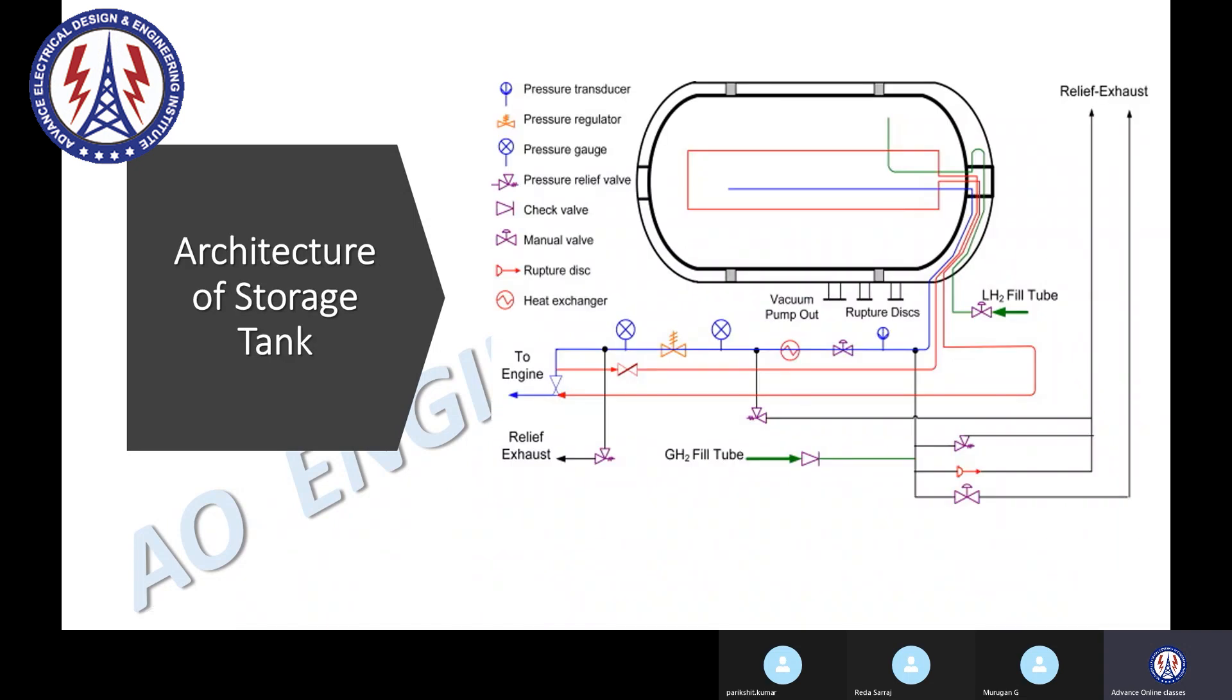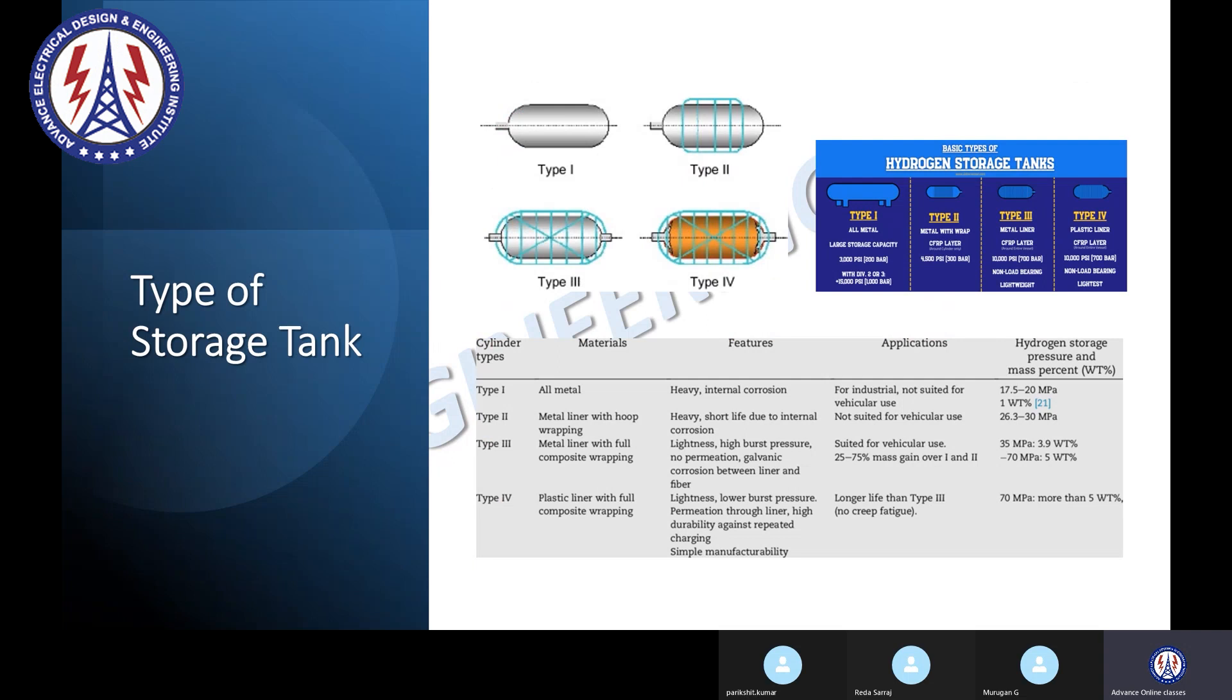We are using four types of tank. Those four types of tanks are called Type 1 tank, Type 2 tank, Type 3, and Type 4 tanks. So if you see now, this is the four types of tank: Type 1, Type 2, Type 3, Type 4.